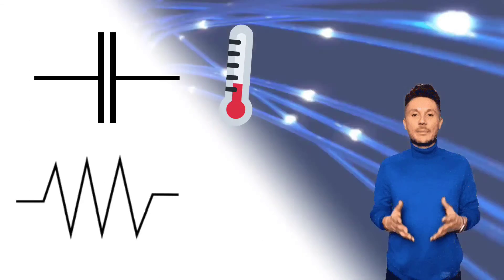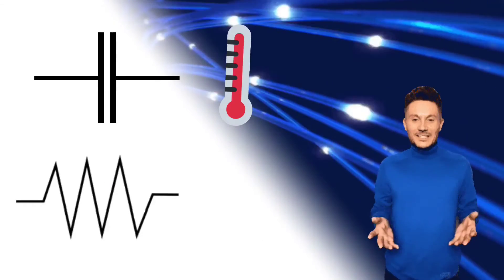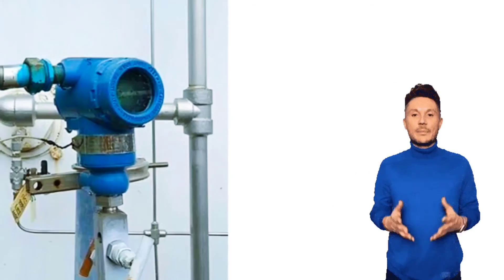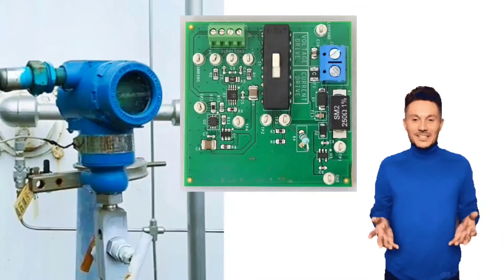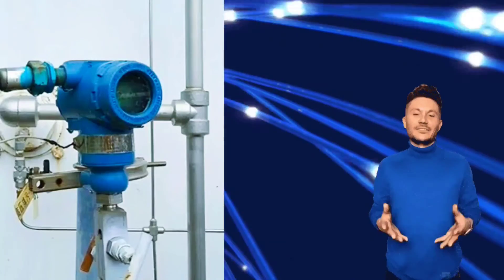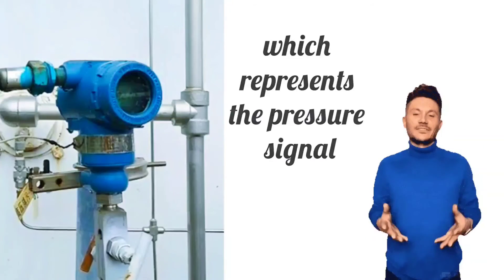This resistance or capacitance change is converted into an electrical signal, which is processed by the circuitry of the transmitter. After this process, the transmitter generates an output signal which represents the pressure.